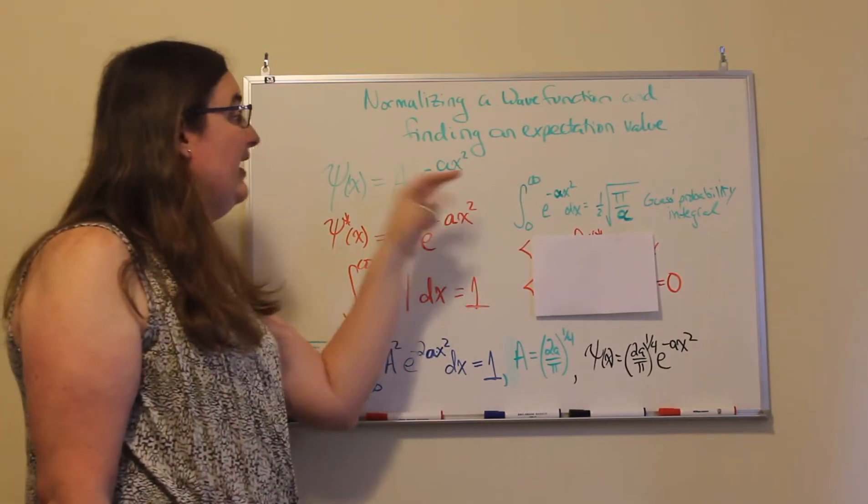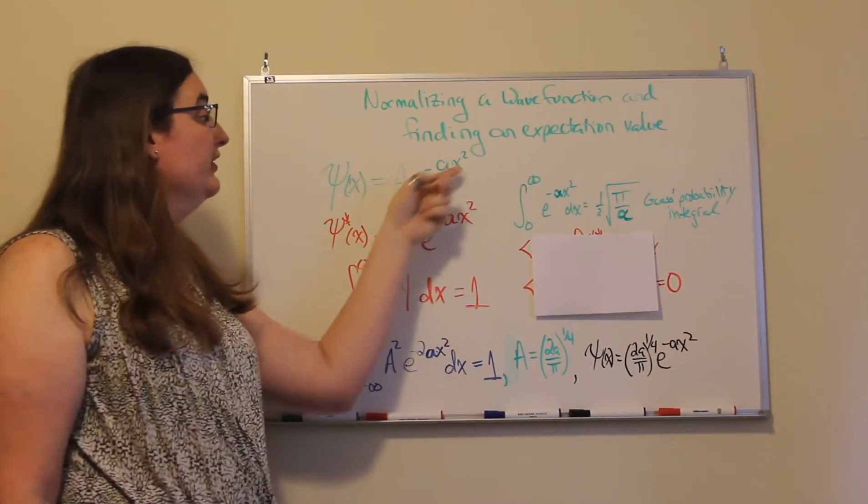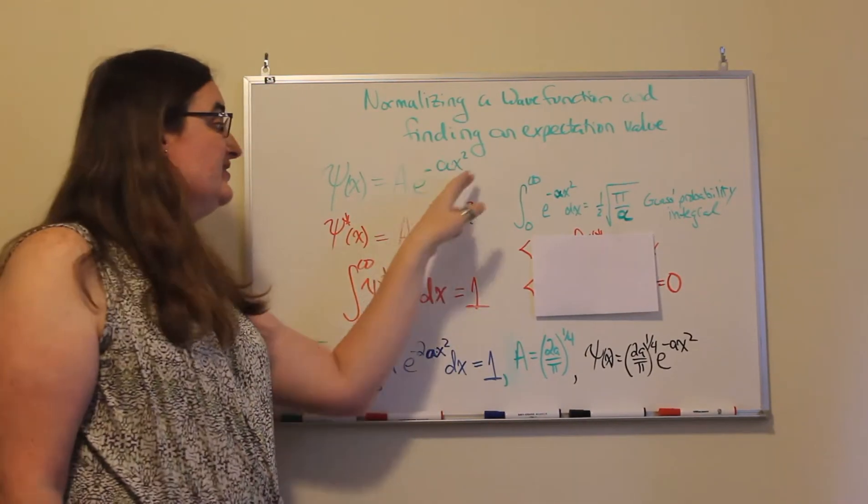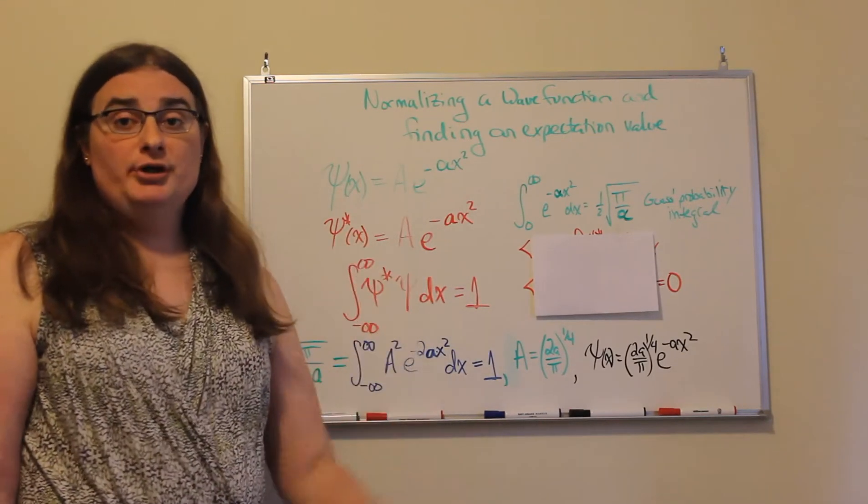Now, as x goes to infinity, this goes to zero pretty quickly, e to the minus x squared. As x goes to negative infinity, this goes to zero pretty quickly.